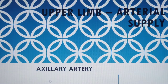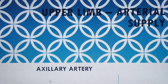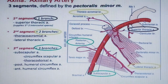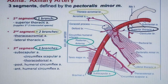Today we continue: beyond the outer border of the first rib, the subclavian artery changes its name. Because we are in the armpit area — the axilla — the artery is now called the axillary artery. From the outer border of the first rib up to the inferior border of the teres major muscle, this vessel is the axillary artery.